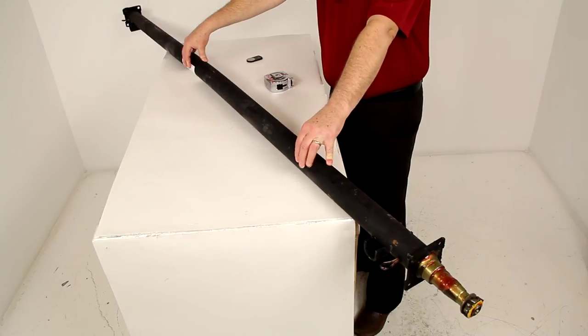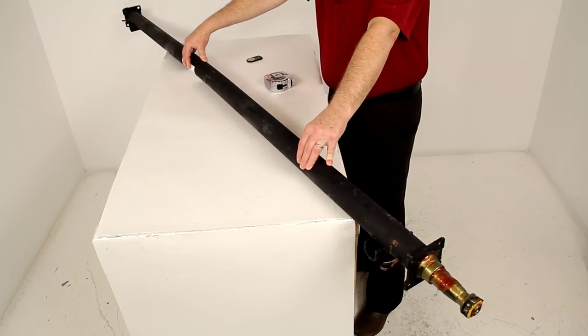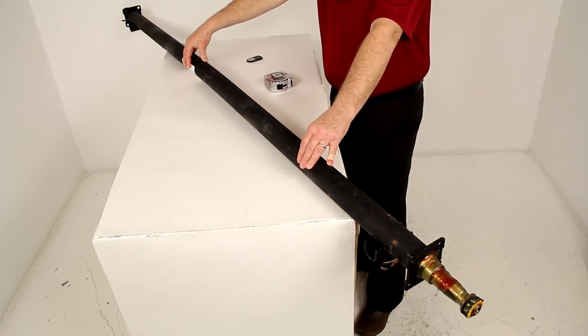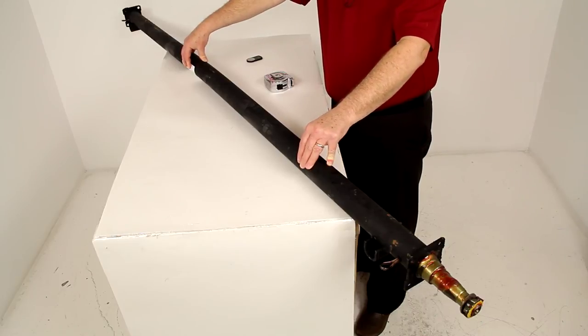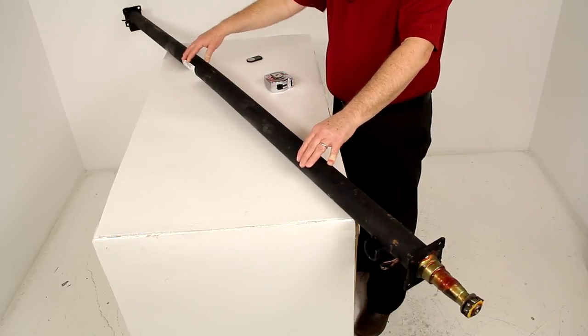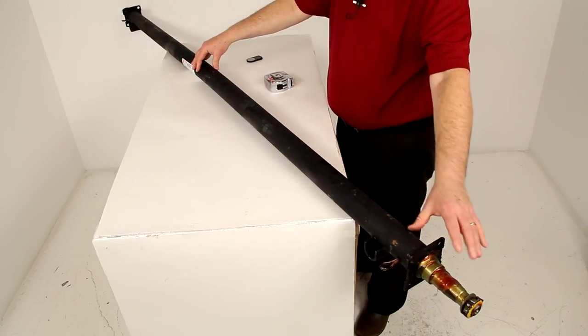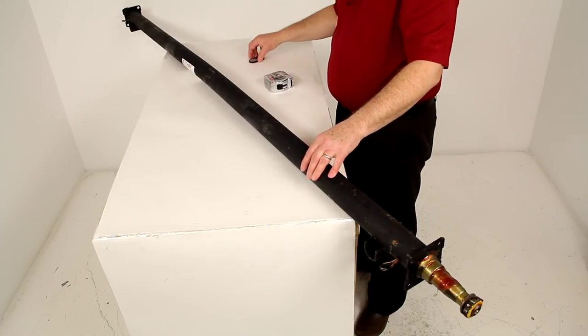That should do it for the review on part number T3584F-EZ-8974, the Dexter trailer axle with the Easy Lube spindles and a 3,500 pound weight capacity.